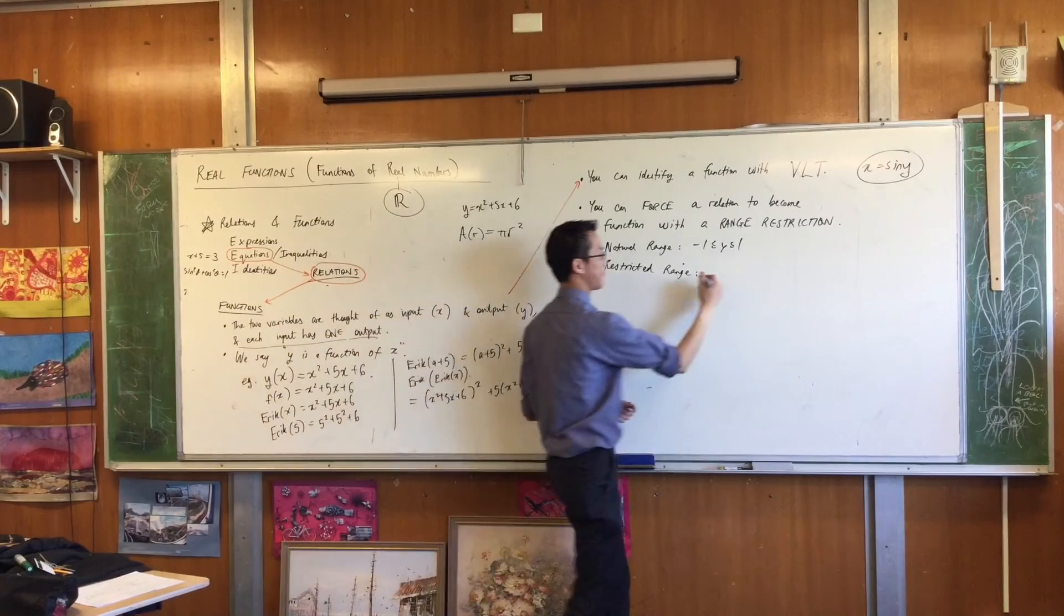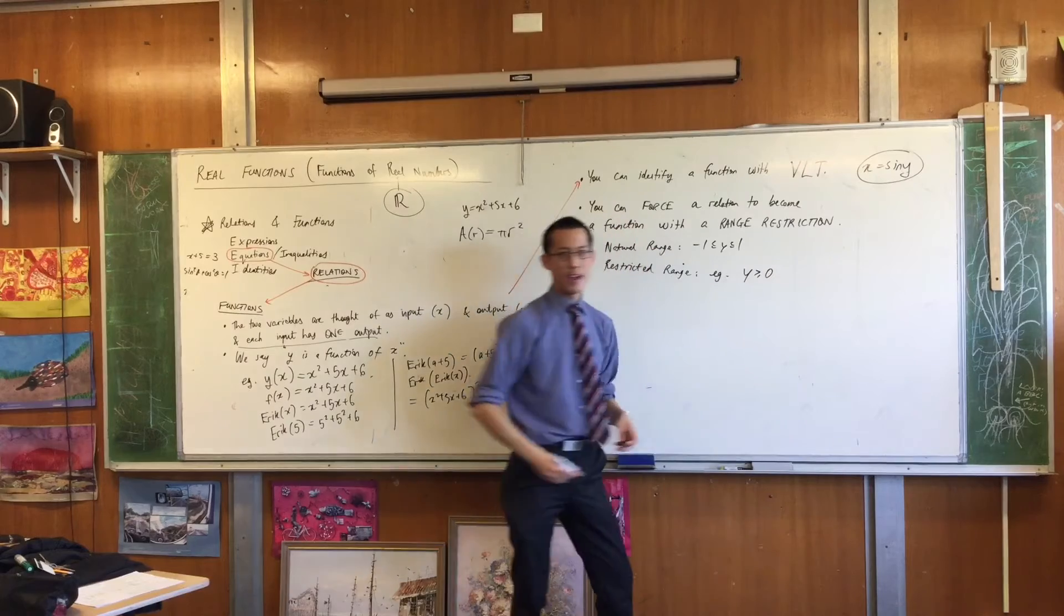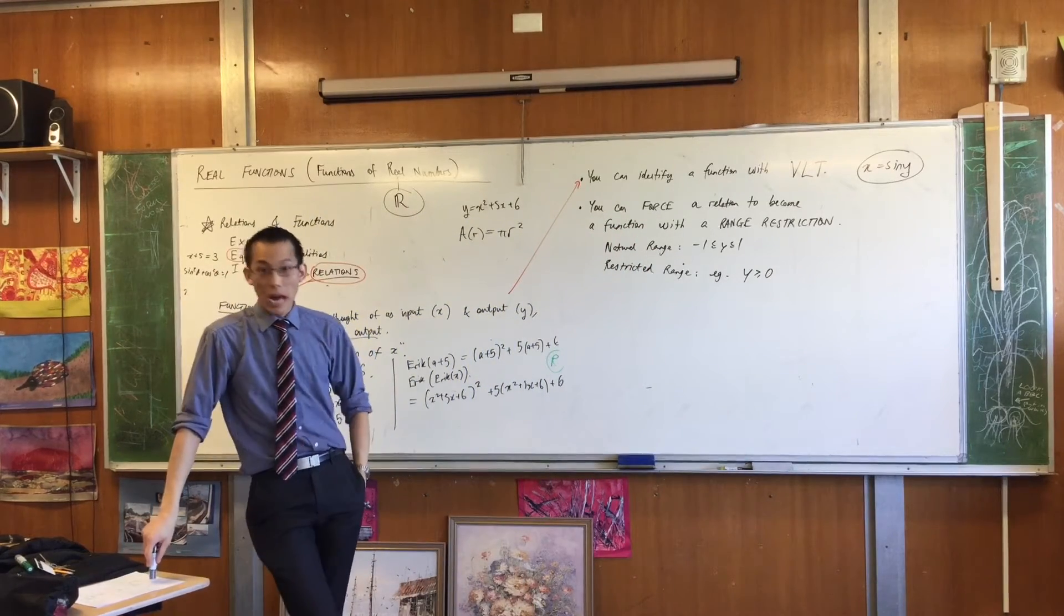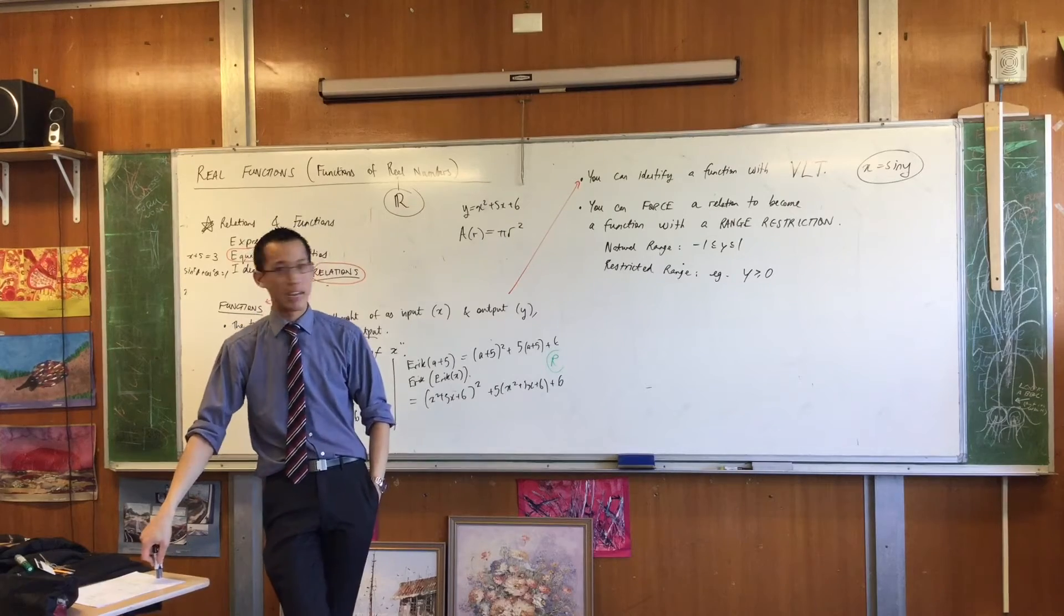For example, if I restrict that, what part of the circle do I get? I get the top half, right? This is a semicircle now. It's not a circle anymore.